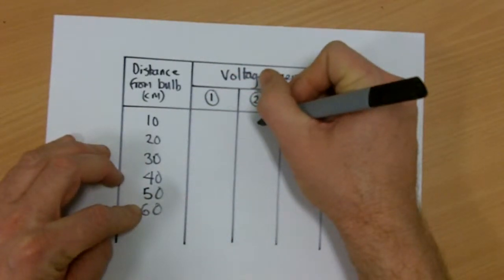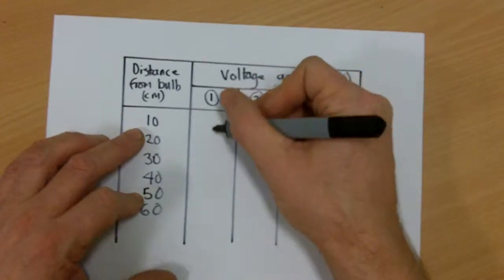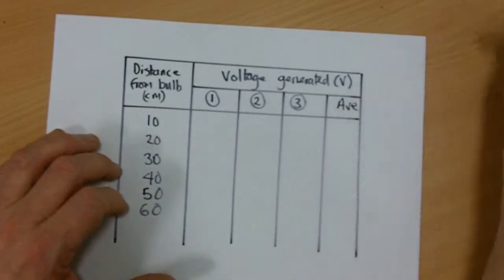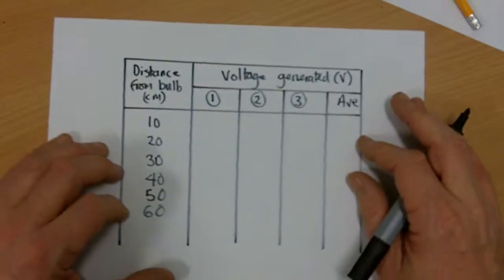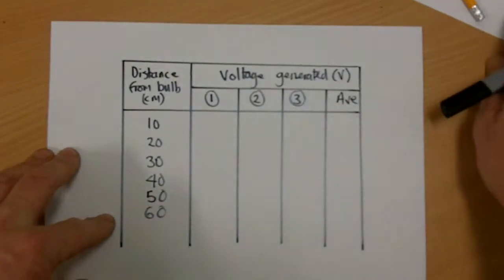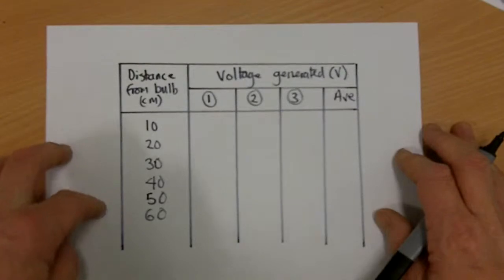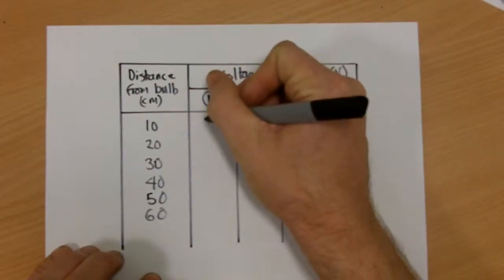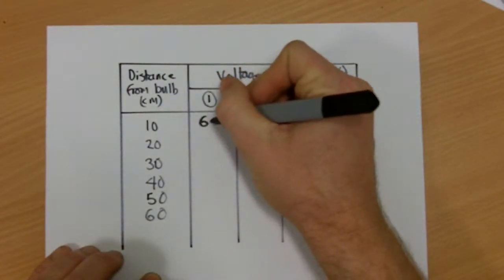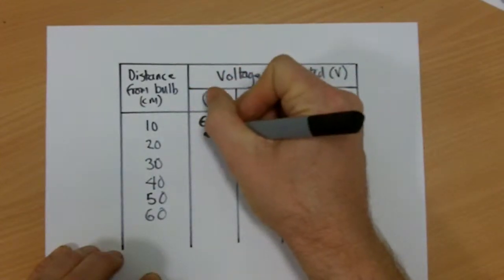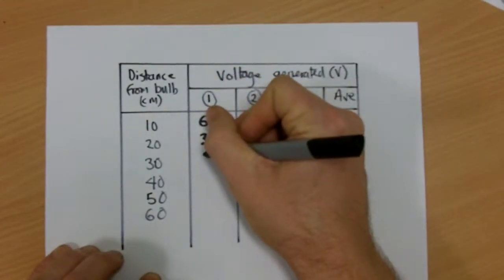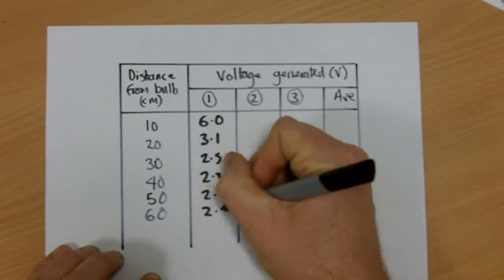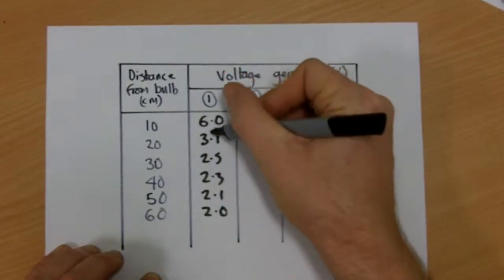Then come back up again to the top. Now, the reason for doing it vertically rather than doing all my results for 10 centimeters at once is because of time constraints. Now if you only have a limited time to do the control assessment, maybe one lesson, it's always important that you have your full range covered. So if I take these results here, let's say I take this one and it's 6 volts, next one is 3.1, next one is 2.5, 2.3, 2.1, and 2.0. Notice I keep my decimal points in line.